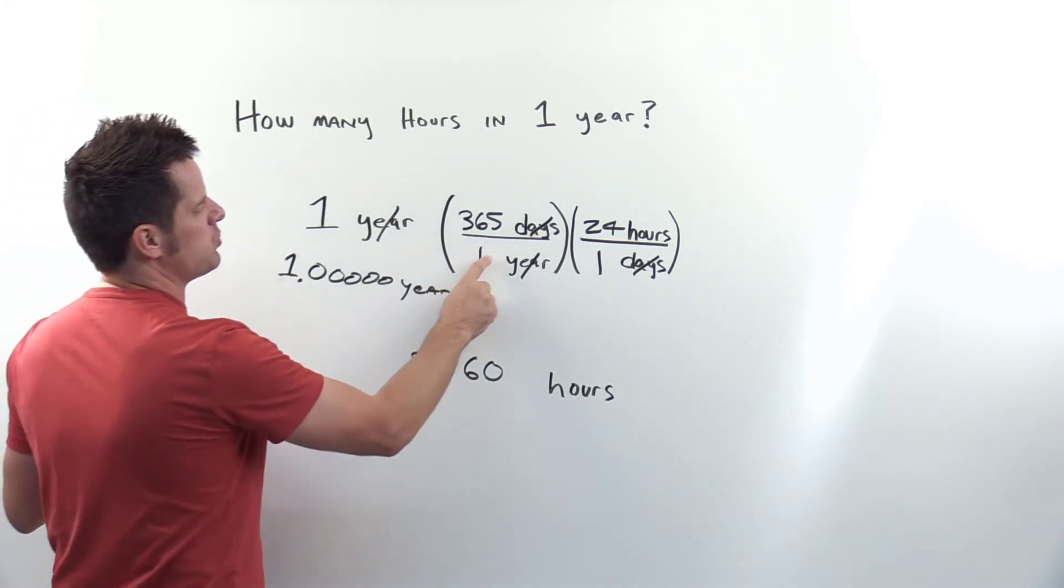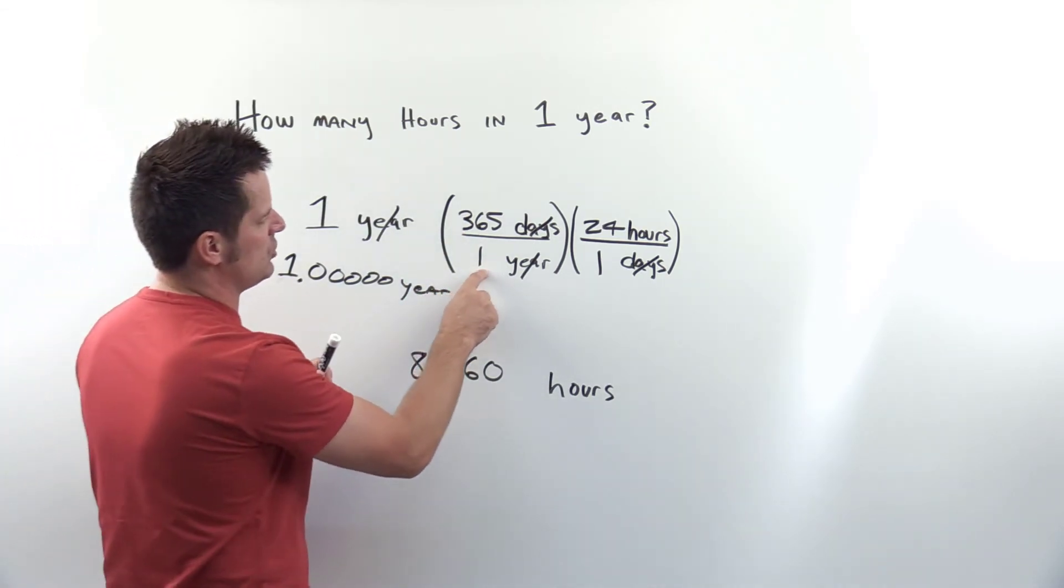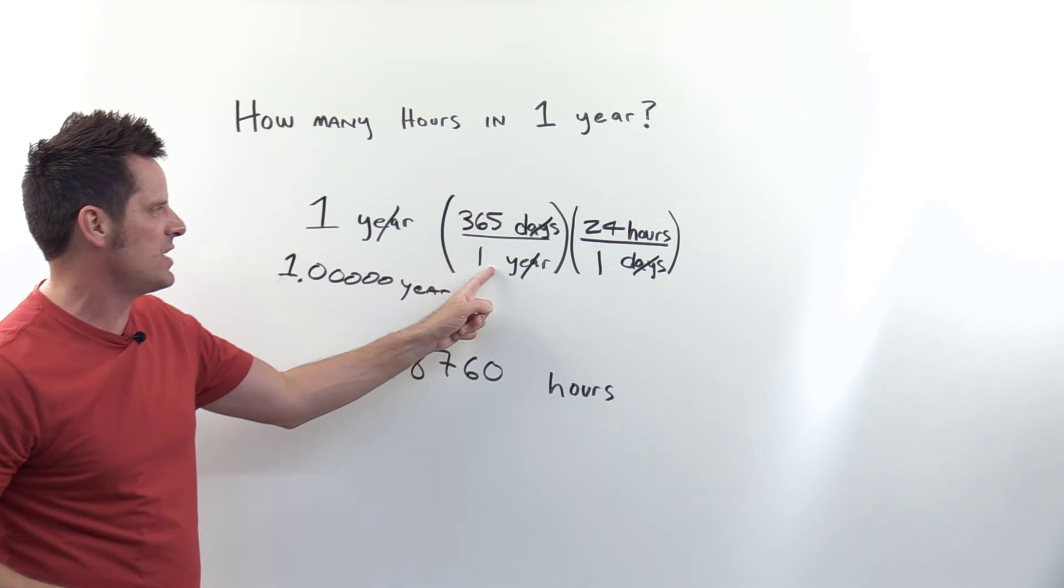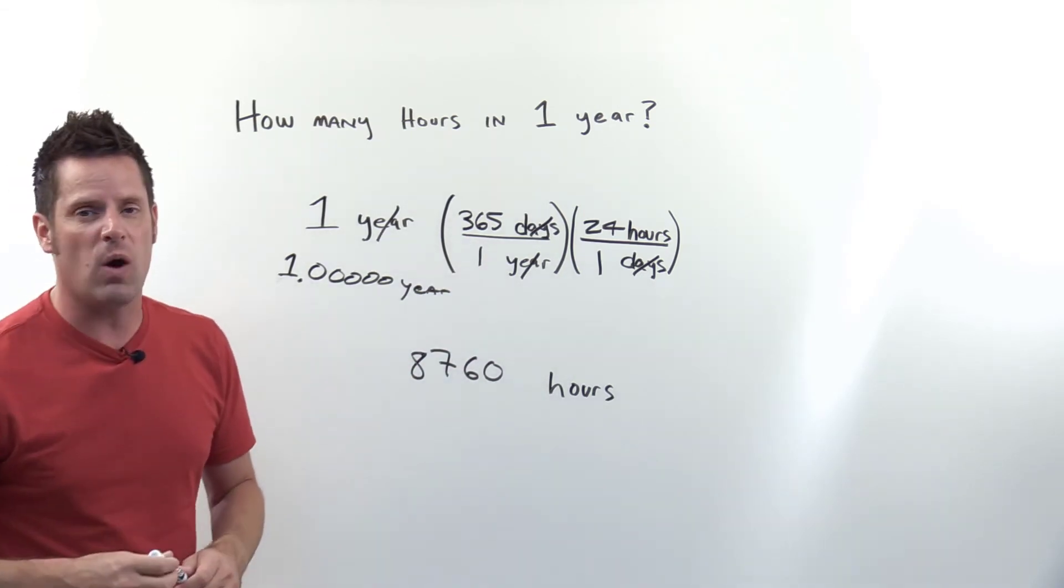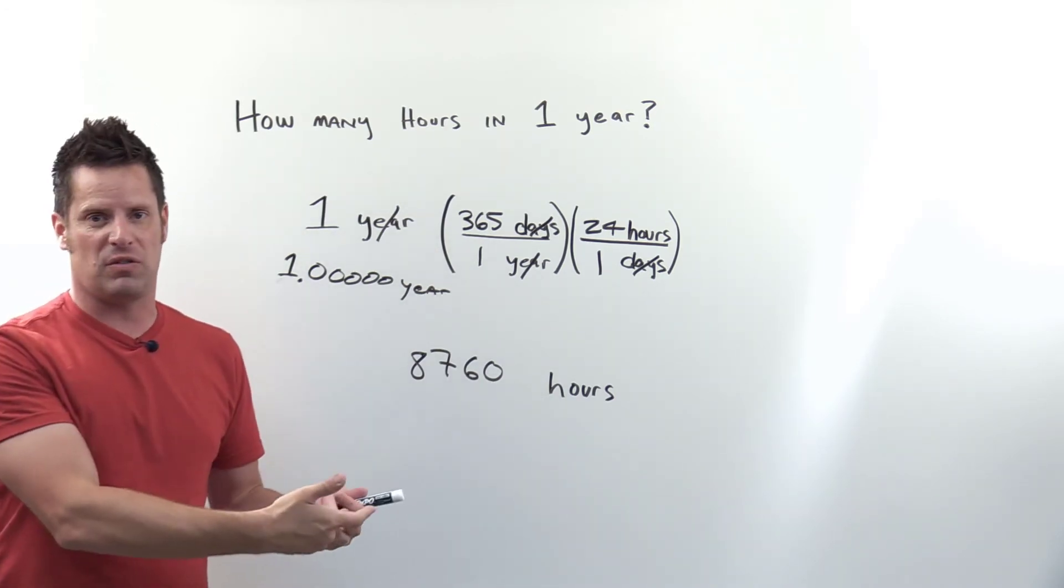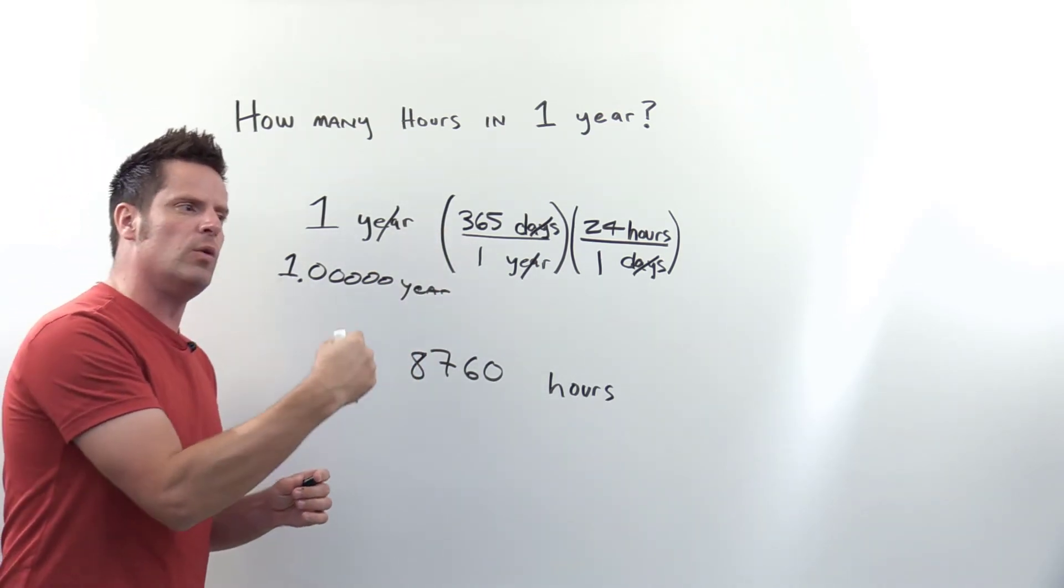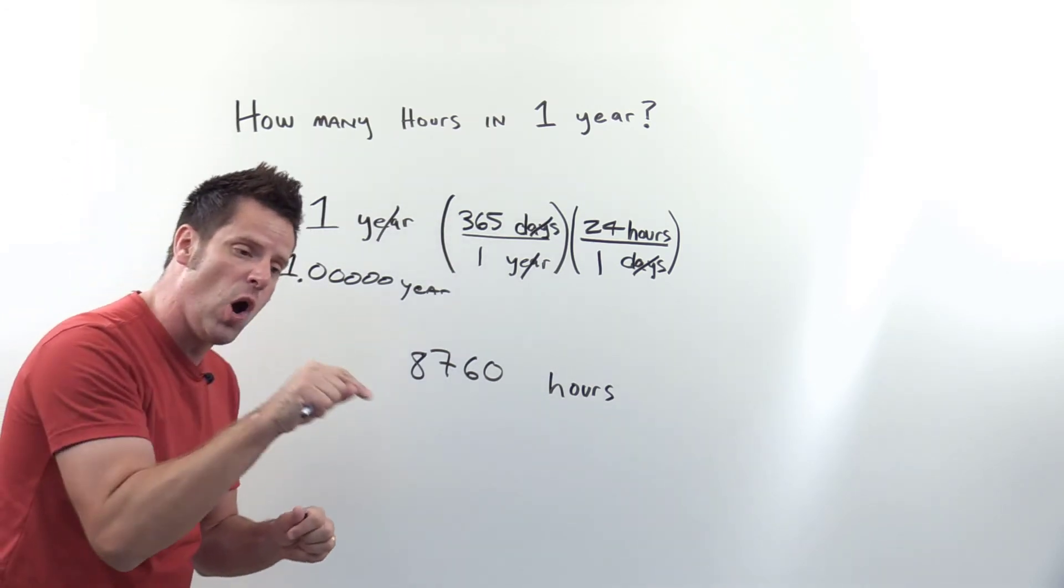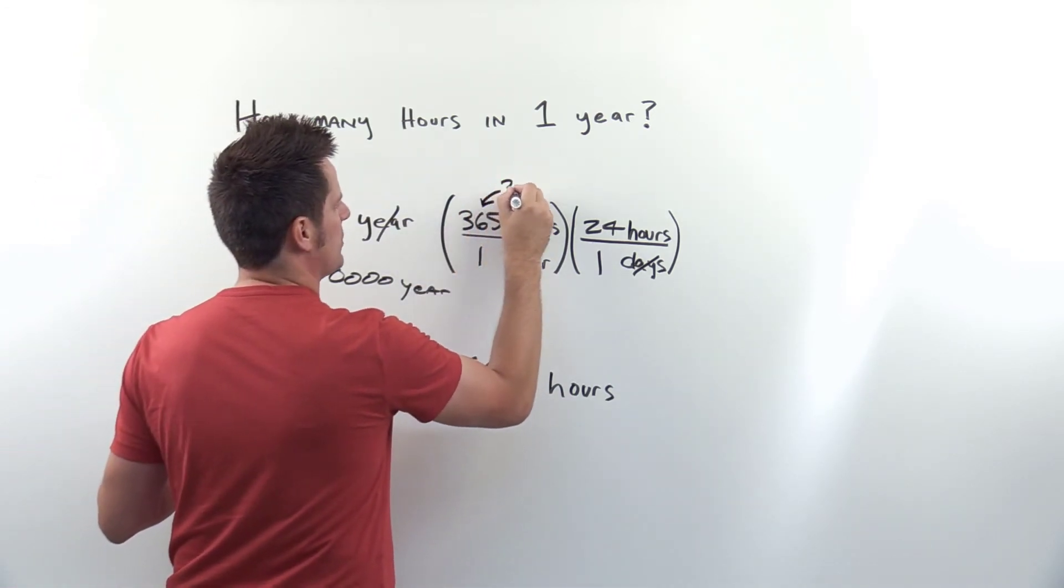Does one year have exactly 365 days? The term on the bottom is exactly one year with infinite significant figures, but is the 365 exactly exact? No, there's wiggle room—that's why we have leap years every four years. This is a rounded limitation. When we look for rounded terms, that's where we see imperfections, and that's where we focus for counting significant figures. This term has three significant figures.